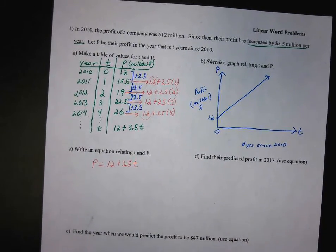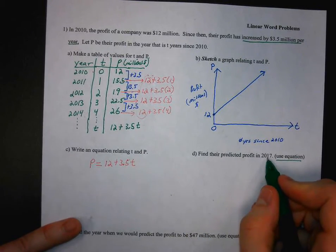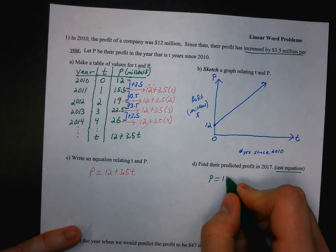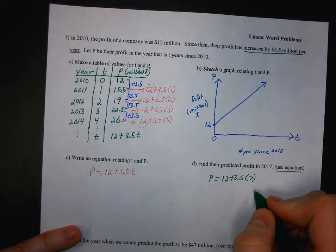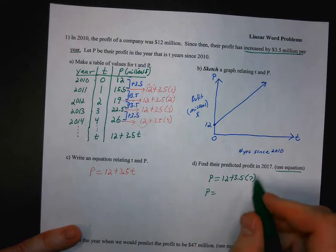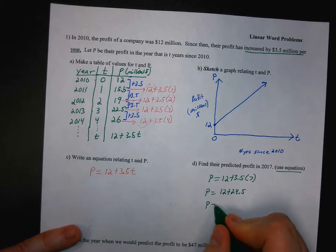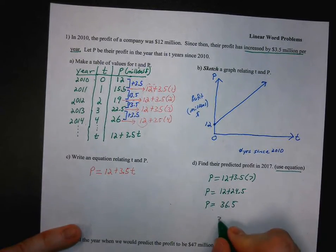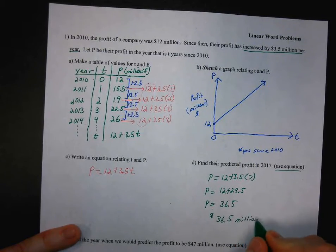Now we'll find the predicted profit in 2017 using our equation. The year 2017 is a T value of 7. So the profit equals 12 plus 3.5 times 7. Doing the arithmetic: 3.5 times 7 is 24.5, and adding that to 12 gives us 36.5, or 36.5 million dollars.